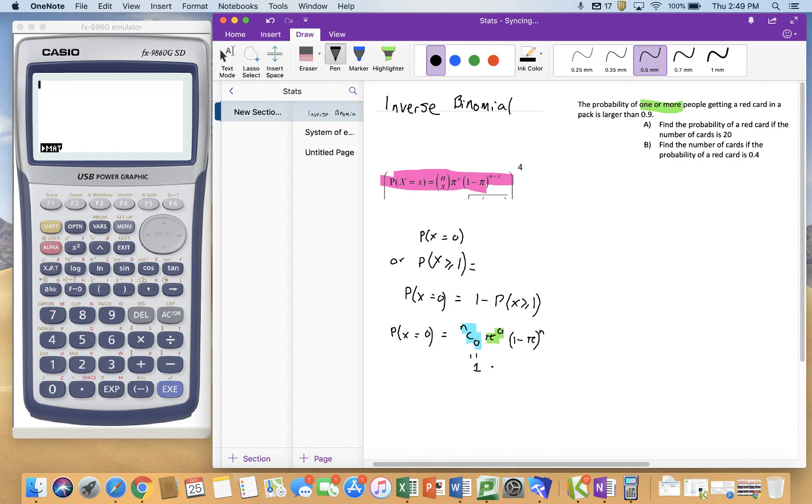And then the second part of my formula is the probability of success to the power of 0. Well, anything from remembering our stuff at year 11, anything to the power of 0 is 1. So actually, my probability equation for x equals 0 is just 1 minus my probability of success to the power of the number of trials. And that's how I can solve these problems.